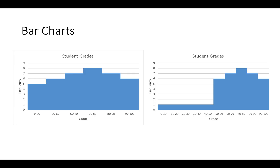Here are the exact same student grade numbers graphed two different ways. On the left, the lowest grade bar covers zero to 50 — a much wider range than the others. That zero-to-50 range shouldn't be just one bar, since that's 50 values versus 10 for each other bar. The right graph gives a more realistic picture of how grades are distributed. Always keep bars the same width, don't skip any categories, and always start the y-axis from zero.